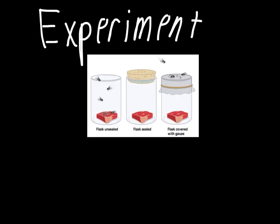Redi's experiment involved three different setups with three different jars. The things he kept the same were the type of flask — you can see it's the same kind of glass used in each experiment — and the same kind of meat in every jar. In a scientific experiment you only want one variable, one thing you're changing, and he did a good job with this. The first flask was entirely open to the air, allowing flies to come and land on the meat.